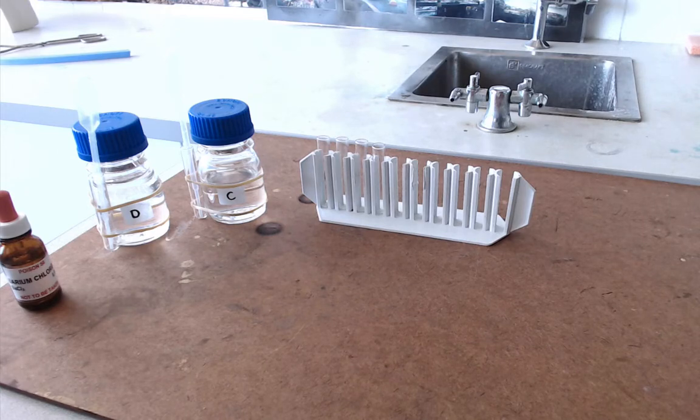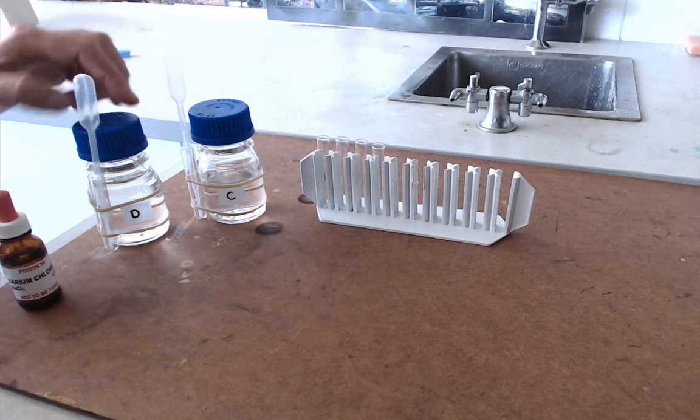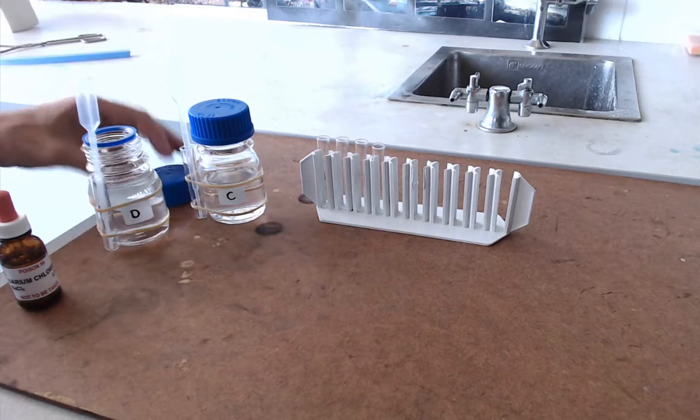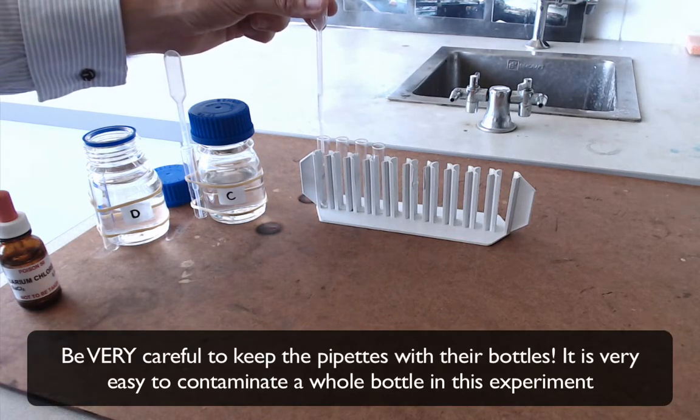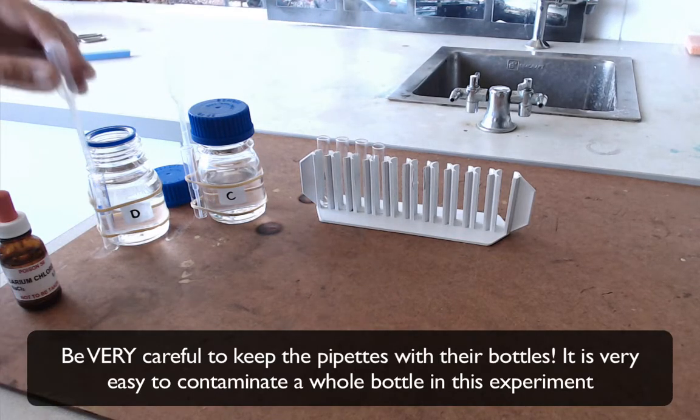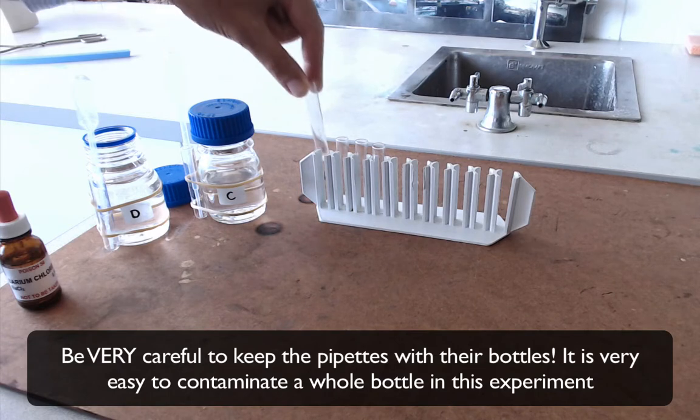Basically, each of the sets of tests involves putting just a few drops of each of these liquids into a test tube. So take a few drops of substance D and put it into one test tube. These are mini test tubes that we're using, so a few drops actually looks like quite a lot in the tube.